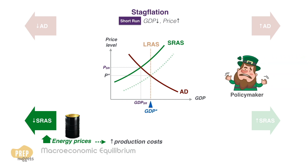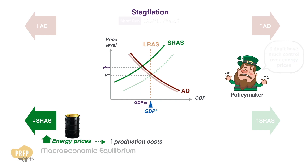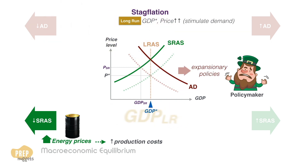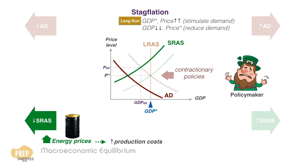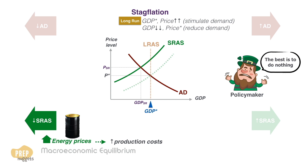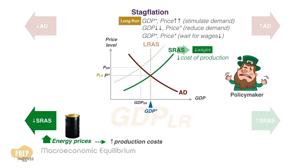Firstly, most economies are net importers of energy, so there's little that can be done to moderate energy prices. To resolve this problem, policymakers can take actions to stimulate aggregate demand to restore full employment. However, this is not ideal as the price level ends up even higher. Conversely, policymakers can choose to fight inflation by decreasing aggregate demand, but this is not ideal either, as GDP is reduced further. What policymakers can hope for is to do nothing and wait for wages to come down due to high unemployment, such that the costs of production are lowered and the SRAS shifts back to the right, where price and GDP go back to their previous levels.